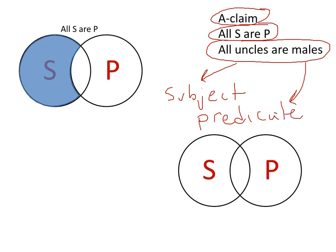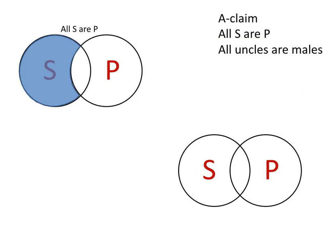It's the predicate term of the claim. Meaning that the predicate says something about the uncles. It's maybe a characteristic of uncles.